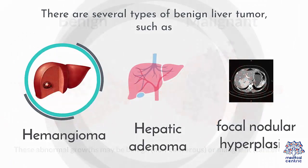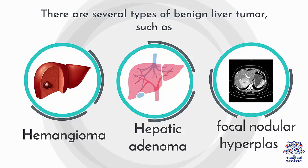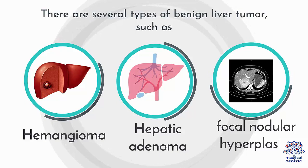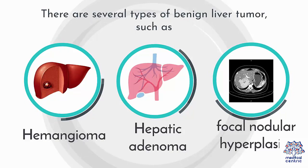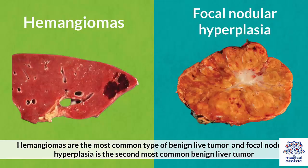There are several types of benign liver tumor, such as hemangioma, hepatic adenoma, or focal nodular hyperplasia. Hemangiomas are the most common type of benign liver tumor, and focal nodular hyperplasia is the second most common benign liver tumor.